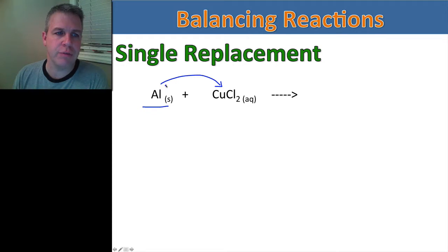So here we have aluminum. I know aluminum has a charge of positive 3, so it's a positive ion. And that is going to switch places with this copper 2. I know that chlorine has a charge of negative 1, so to balance this out, this is going to give this a positive 2 charge. So I'm going to switch those out.